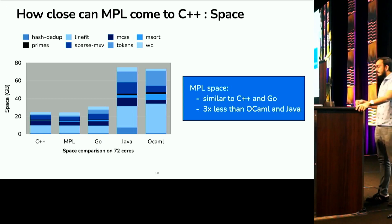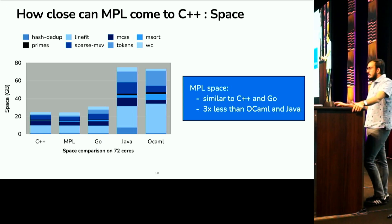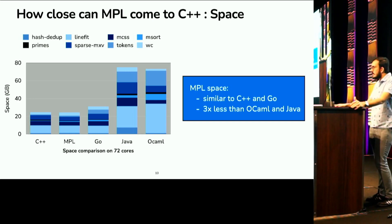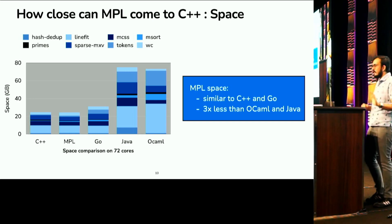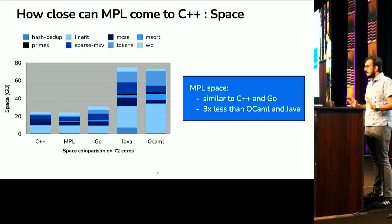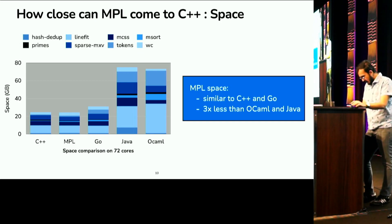Now, the takeaway from this evaluation is not to nitpick between the languages. It's just a simple takeaway that if you have the right garbage collector, parallel functional programming can compete with the fastest codes out there.